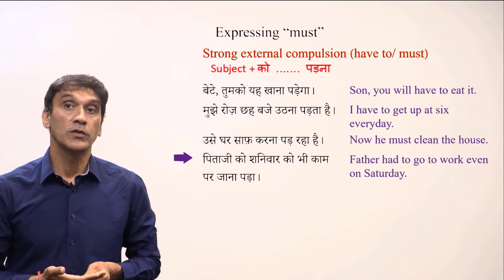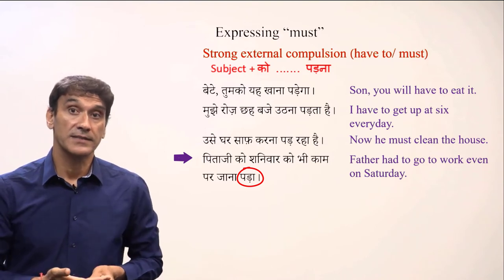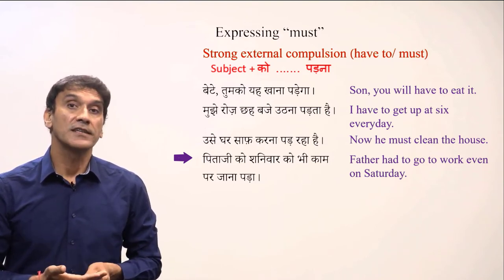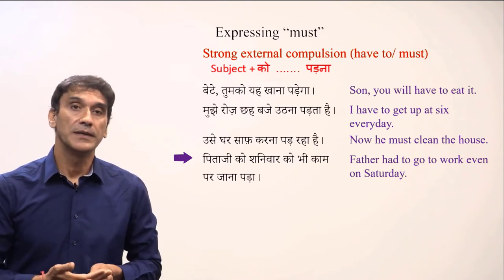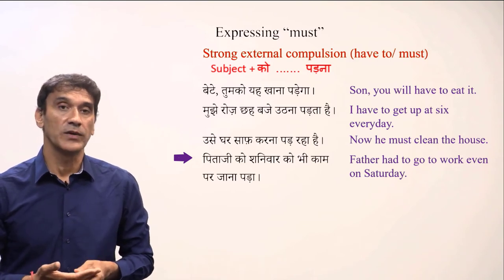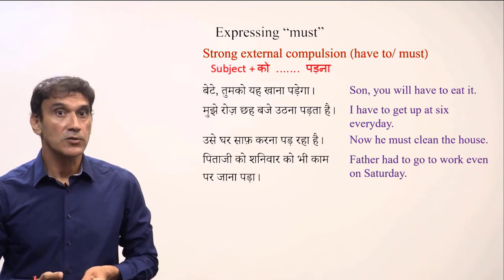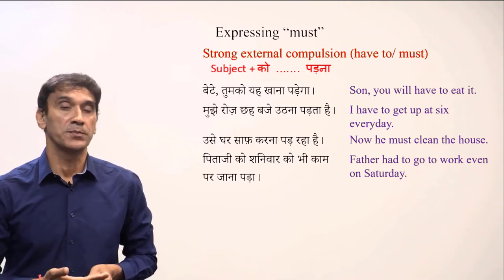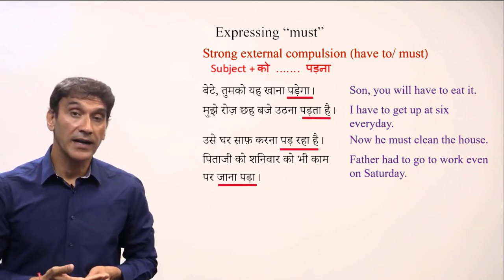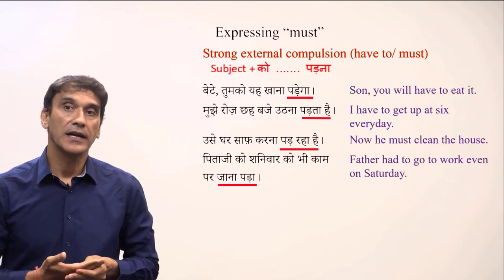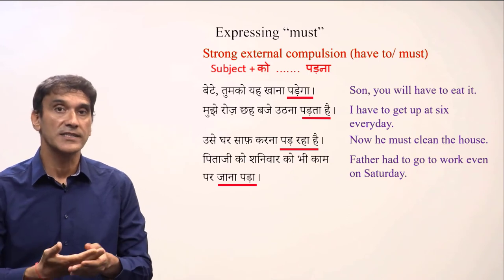'Father had to go to work even on Saturday' — the verb here is in simple past tense. In compulsion constructions, since the subject takes the postposition ko, it will not dictate the verb. The verb is dictated by the object, if there is one. If there is no object, the verb takes masculine singular form. All the example sentences so far had no object, which is why they were all in masculine singular form.